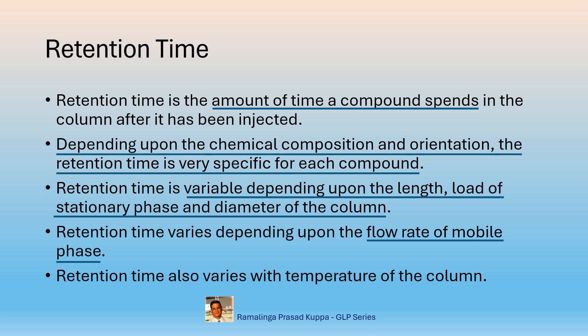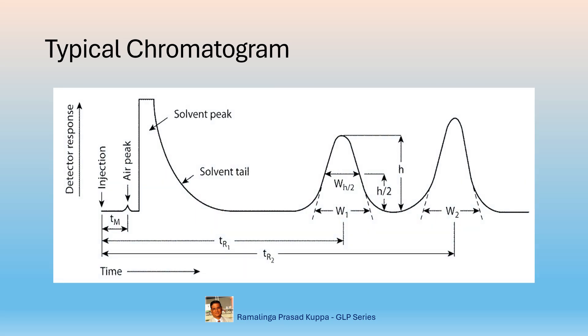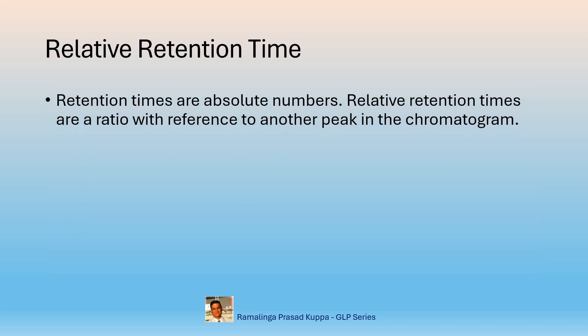Retention time also varies with temperature of the column. More the temperature, lower the retention time; and lower the temperature, longer the retention time. This is a typical example extracted from USP chapter 621. Retention time is measured from the point of injection to the midpoint of the peak where maximum height is achieved. Relative retention times are absolute numbers — they are a ratio with reference to another peak in the same chromatogram. Relative means where the peak appears with reference to another peak, so it is a relative term.